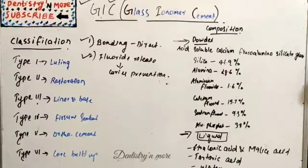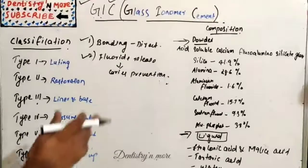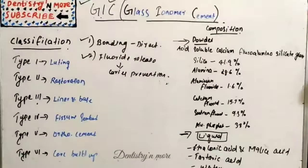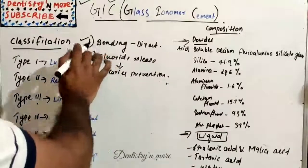Hello everyone, welcome back to another session in Dentistry and More. Today's topic in conservative dentistry is GIC or Glass Ionomer Cement. Glass Ionomer Cement is gaining a lot of popularity among clinicians nowadays because of its two wonderful properties. One is direct bonding - it bonds to the tooth structure by chemical bonding.